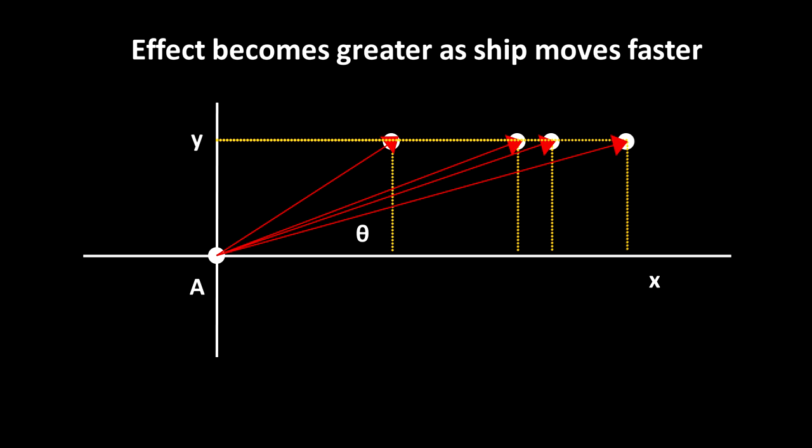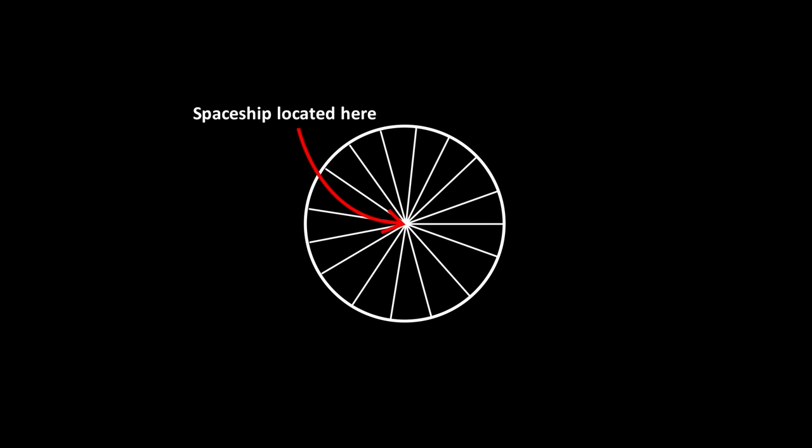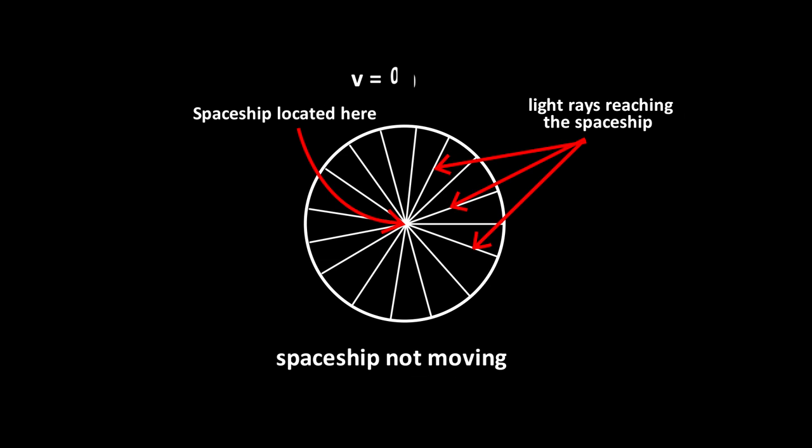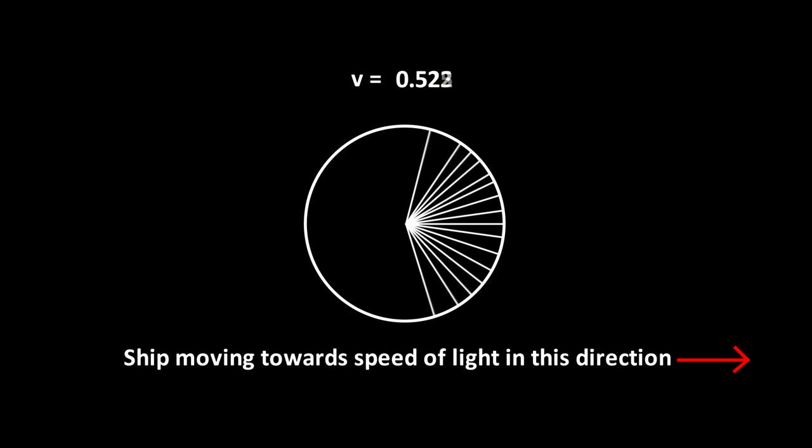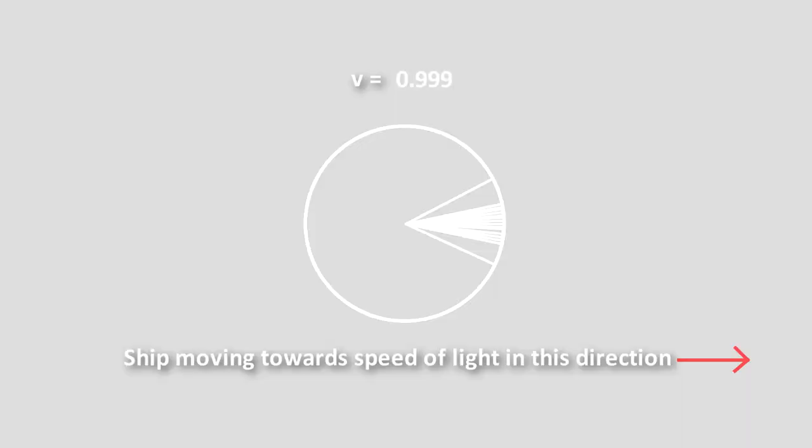We can illustrate this with a circle. If you are in the middle of the spaceship, for the case where you are not moving, photons reaching you from all directions would be the same angle. There is no length contraction in this case. Now as you start moving towards the speed of light, this changes so that you start seeing things that are behind you in your forward view. This means that your field of view increases in the direction of movement and decreases behind the spacecraft. And this effect becomes even more pronounced as you get closer to the speed of light.